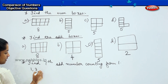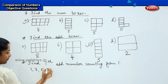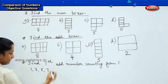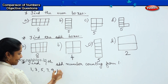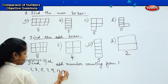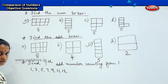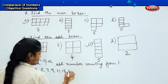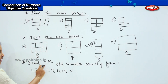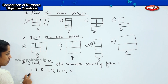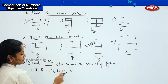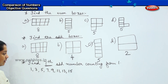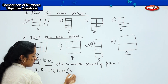Shall we write the odd numbers? 1, 3, 5, 7. Then what will come? 9. Then 11. Then 13. Then 15. So the question asks: find the seventh odd number counting from 1. Shall we count? 1, 2, 3, 4, 5, 6 and 7. The seventh odd number counting from 1 will be 13.